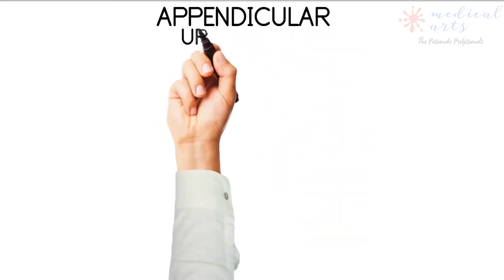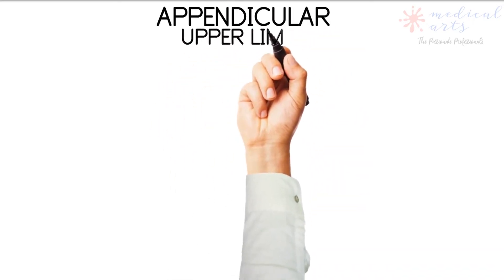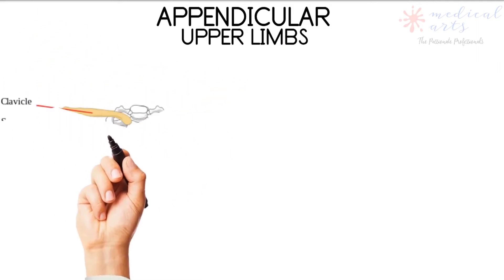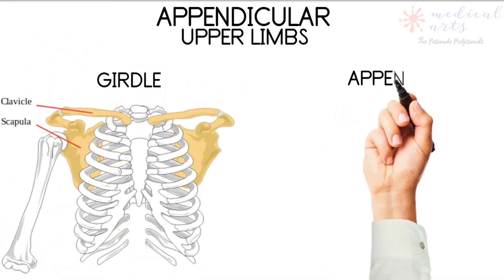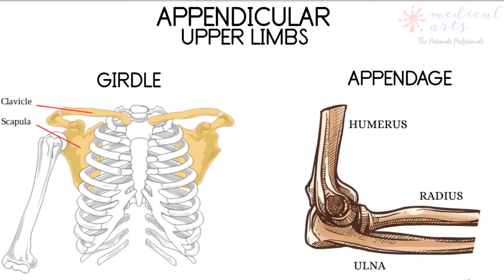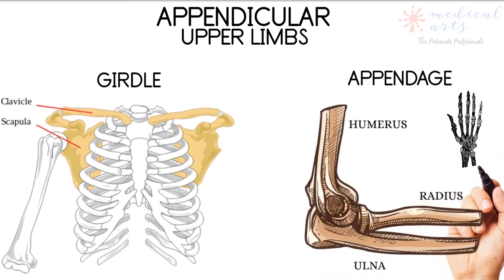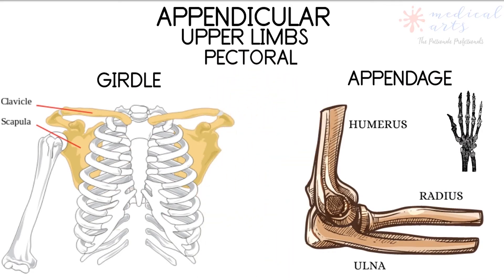The upper limbs part of the appendicular skeleton is called pectoral. It is formed of two main groups of bones. One is the girdle, which connects the limbs to the axial skeleton — the girdle contains the clavicle and the scapula. The second part is the appendage, which consists of the upper limb bones: humerus, radius, ulna, and other bones that form the wrist and hand.